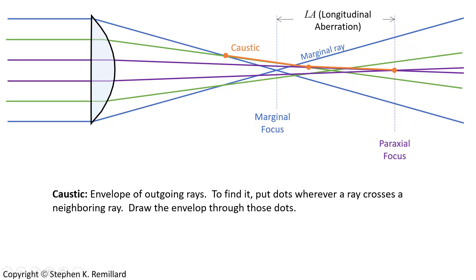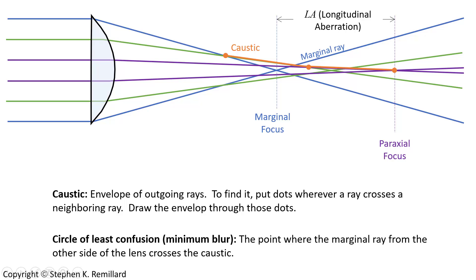If you bring in parallel rays from a point source far out, like a star, they converge on the optic axis but not at a point, so you get a blurred image instead of a sharp crisp point. There is a place along the optic axis where you get the best image. Placing the screen at the paraxial focus won't give a very good image because the marginal rays converge elsewhere. To find the best image, you need to find the circle of least confusion — the point of minimum blur. You find it by looking at where the marginal ray from one side of the lens crosses the caustic. That is a good place to put the screen.